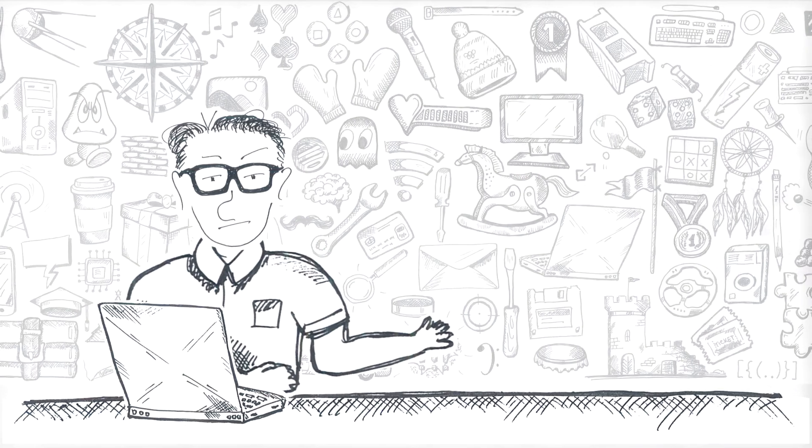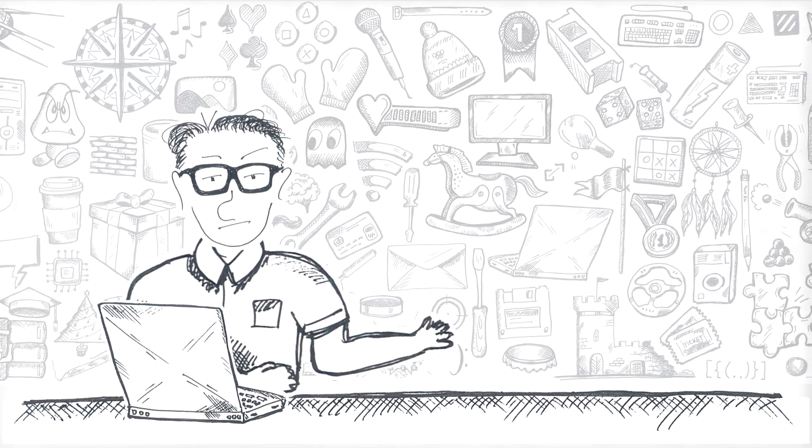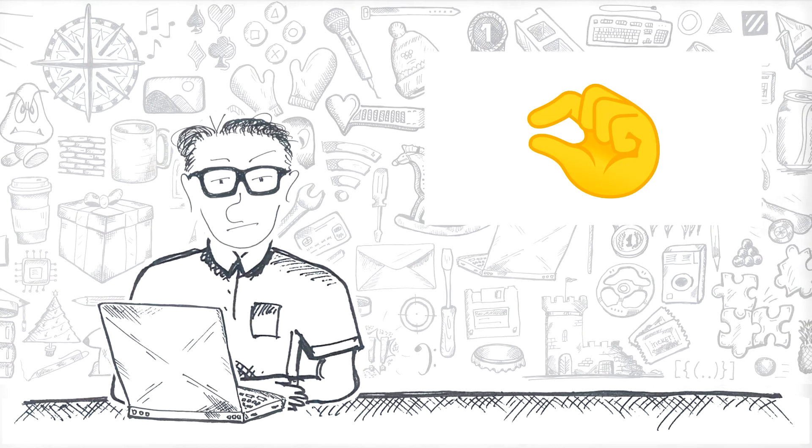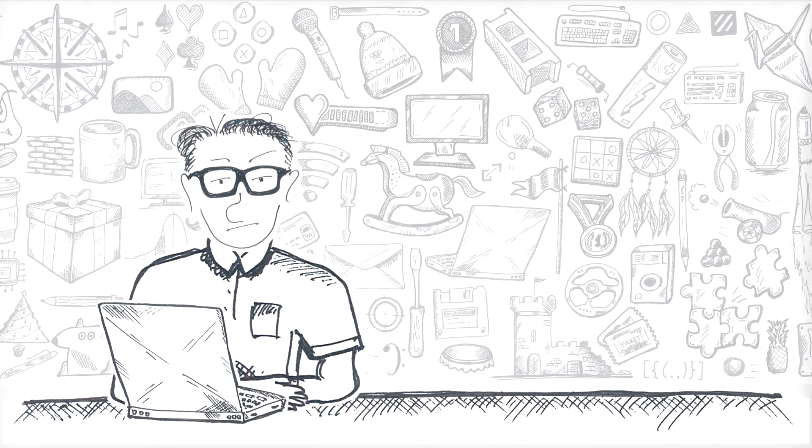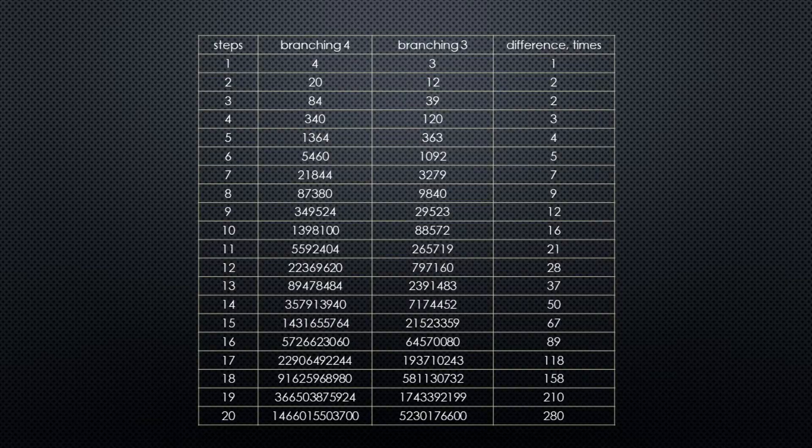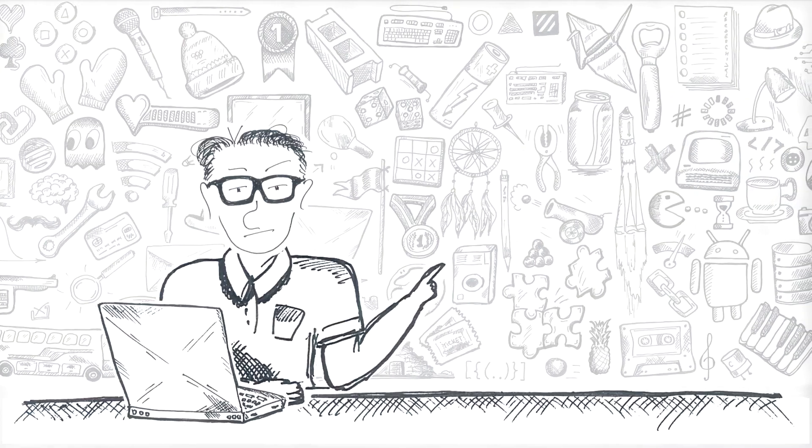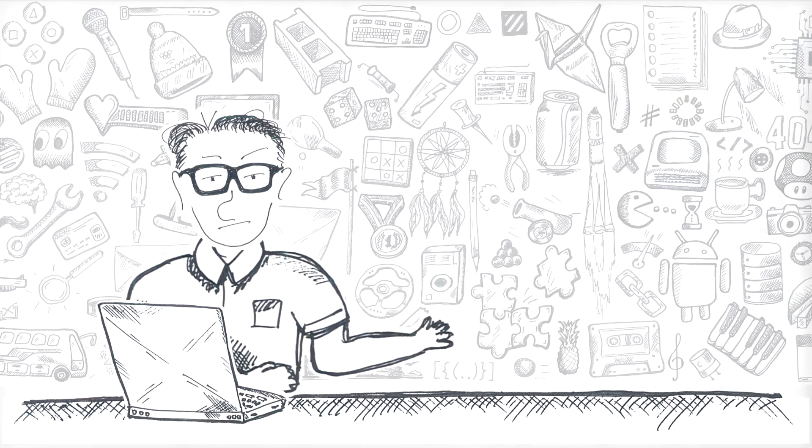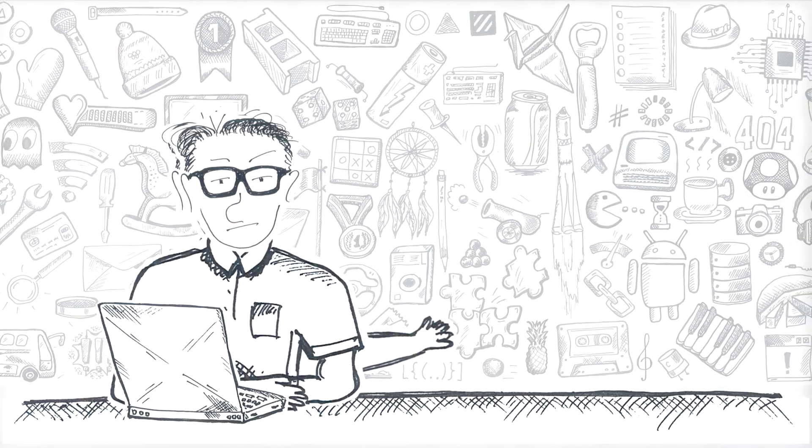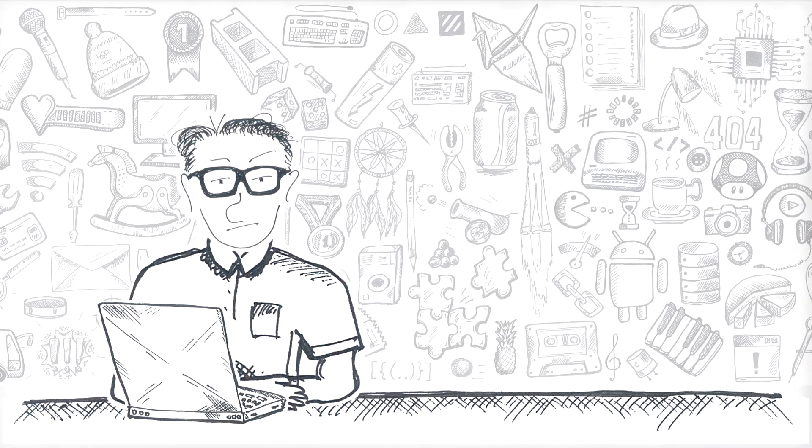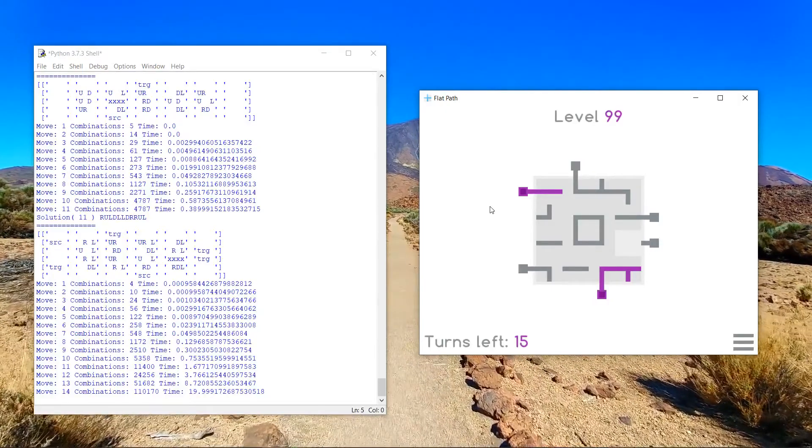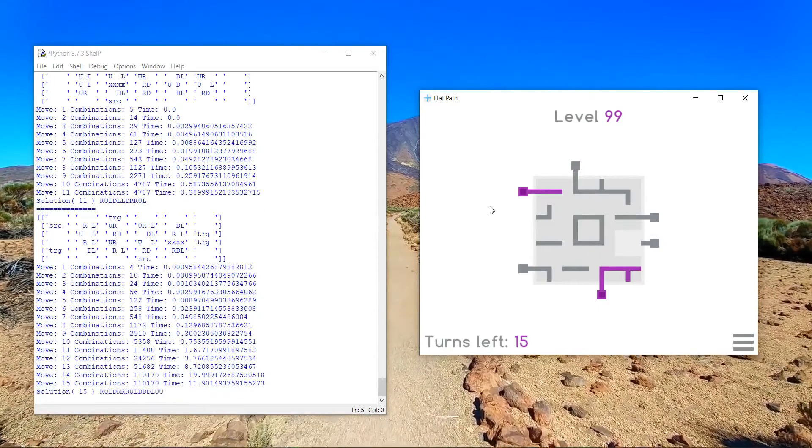What it does is it cuts down your branching factor from four to three. And maybe it doesn't sound like a big deal. It is if you consider exponential growth. Four possible moves made 20 times is a trillion combinations. Three possible moves made 20 times is only five billion. 200 times fewer. Incredible how the branching factor can tame or enhance a computational explosion. And with that, puzzle number 99, the one that required 15 moves, was solved. About a hundred thousand positions to go through took about 40 seconds to solve.